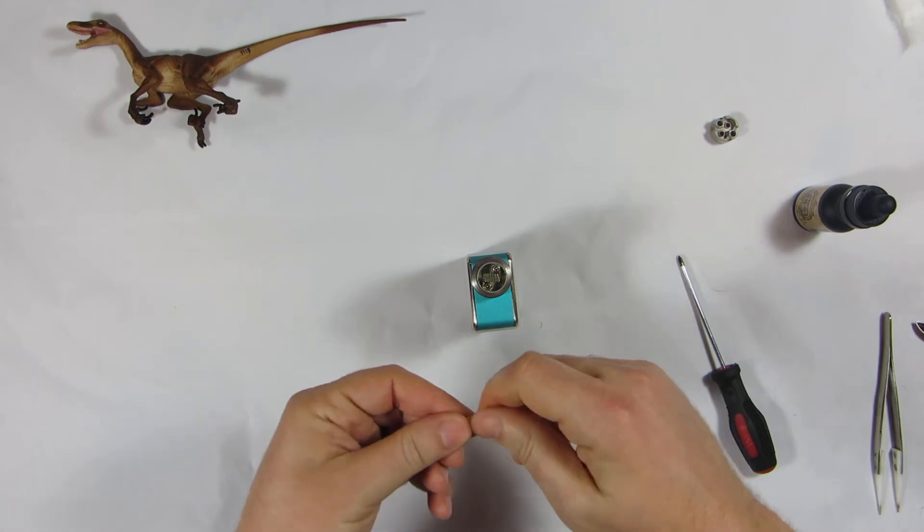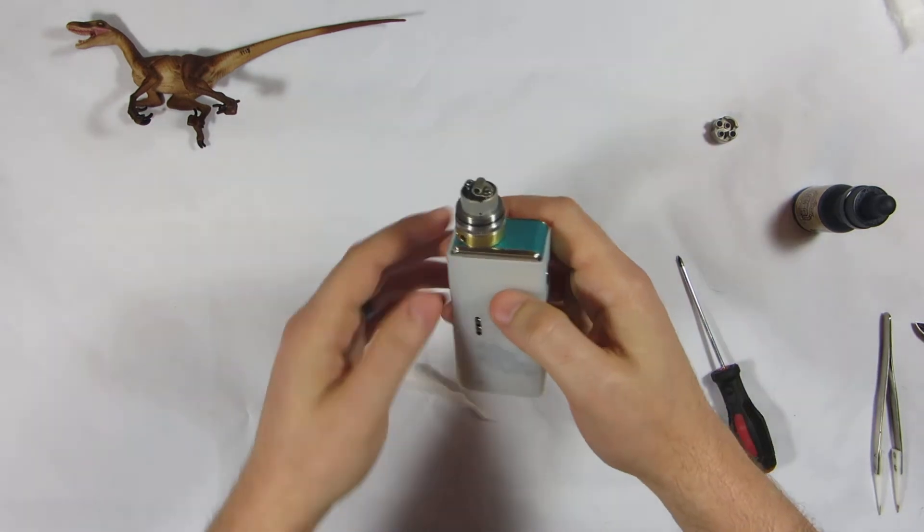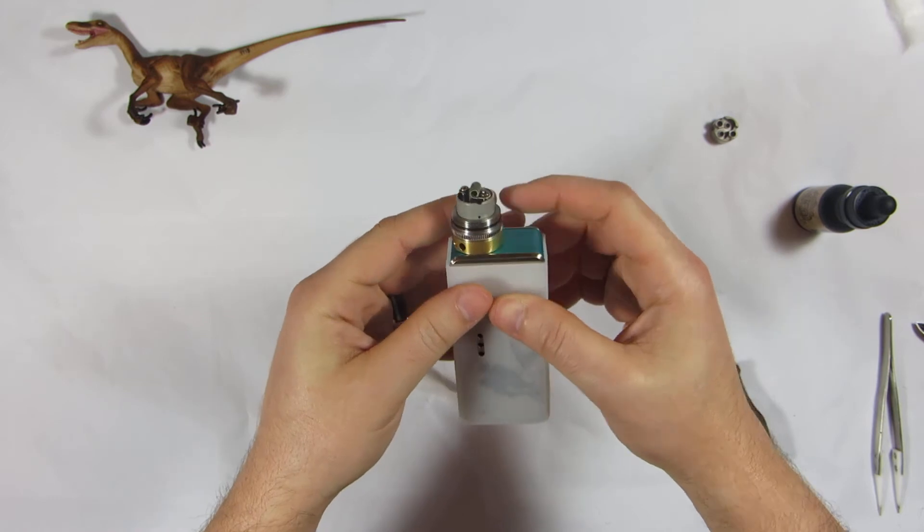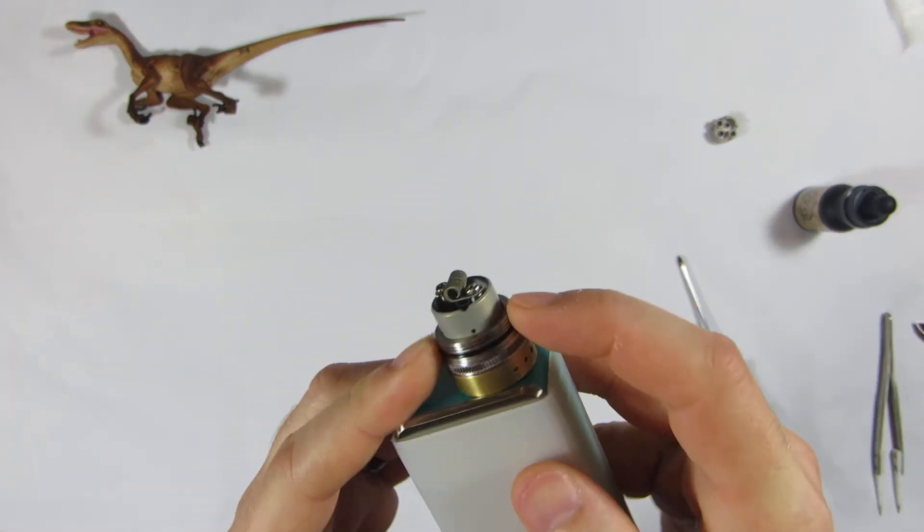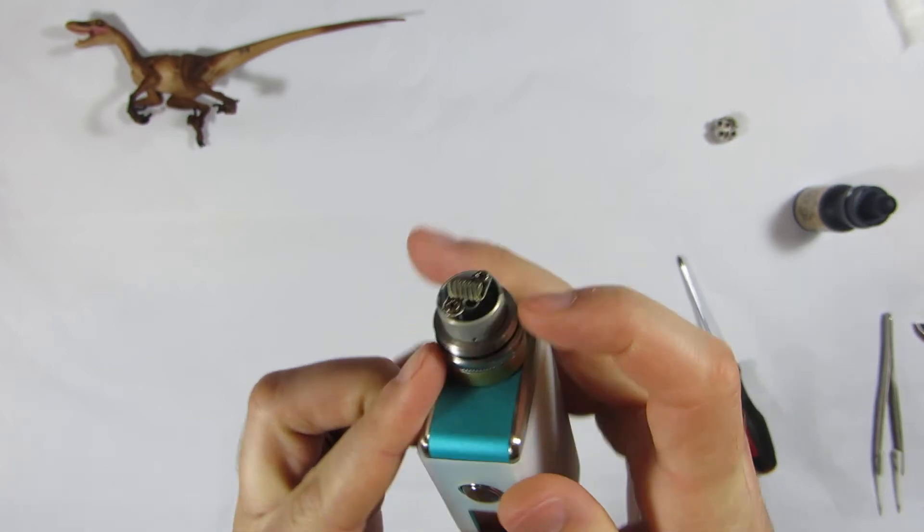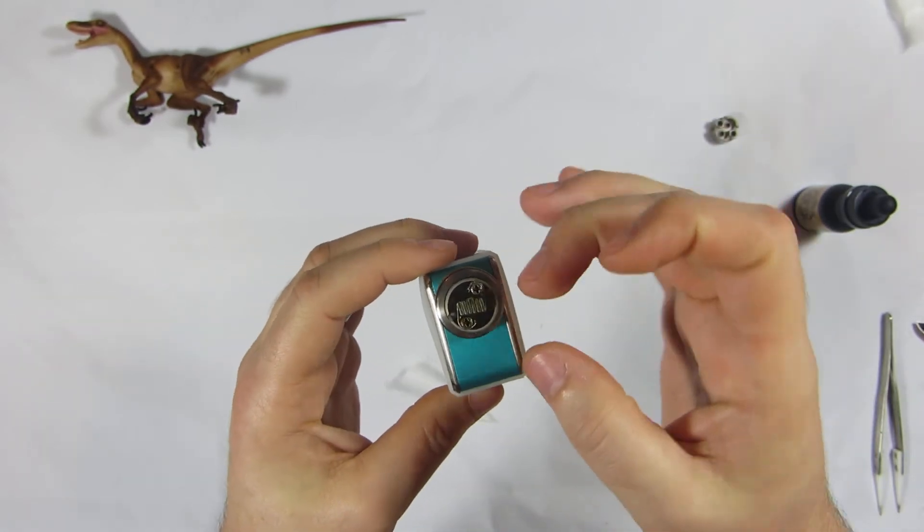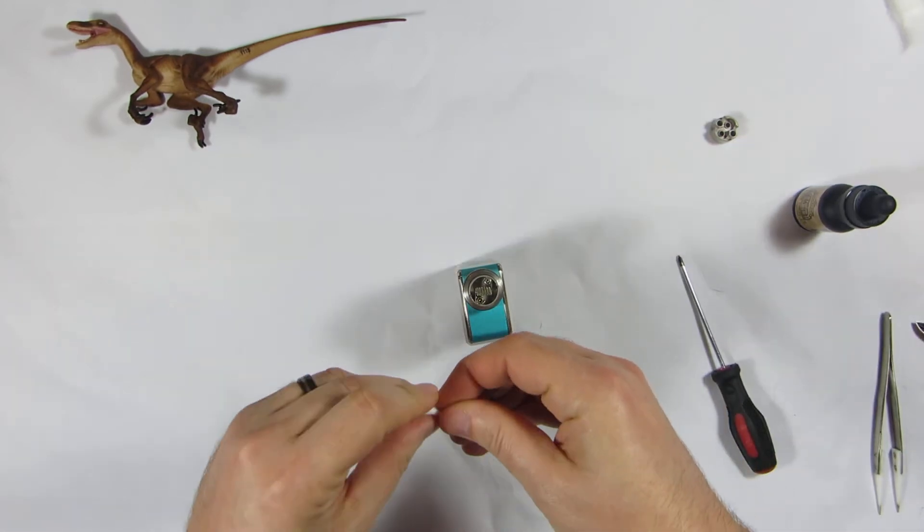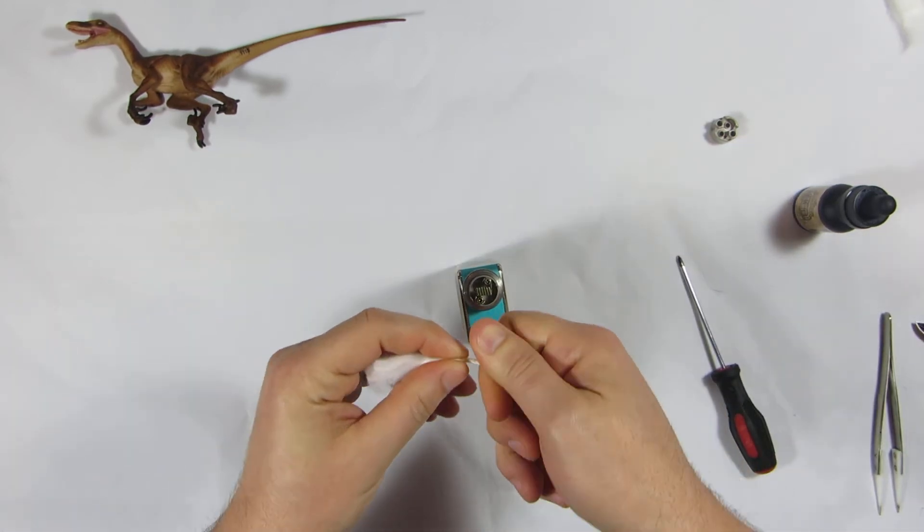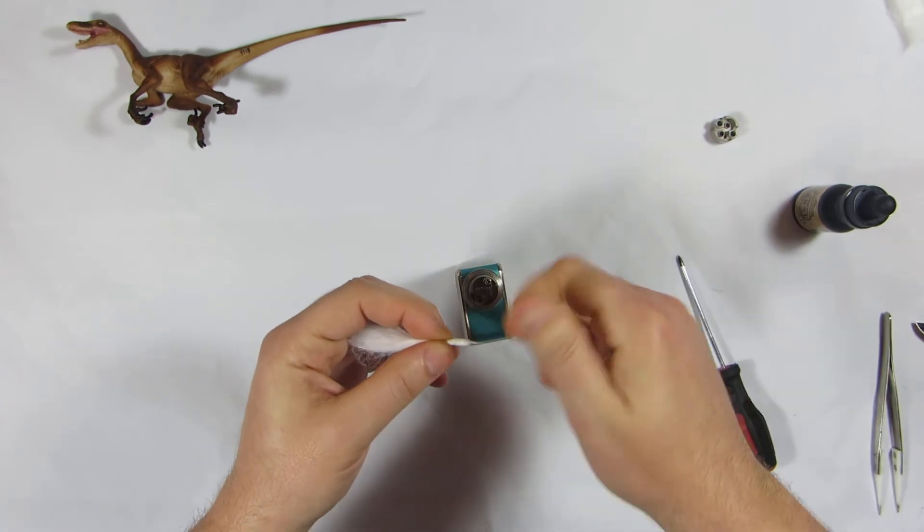So the cool thing about this deck is you're more building it like you would an RDA. It's got four tiny juice holes that go all the way around it. So we want to put cotton in front of each of those juice holes. So I'm gonna wick it with some rayon.